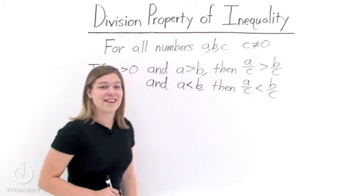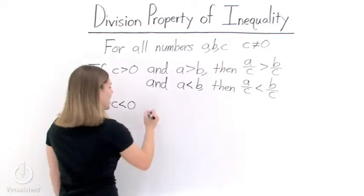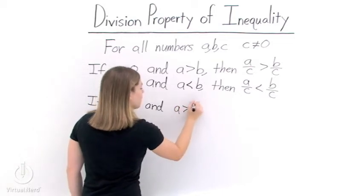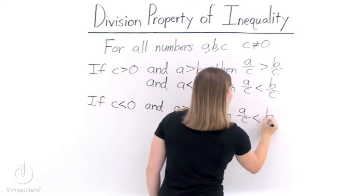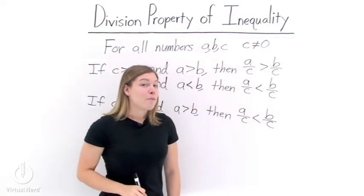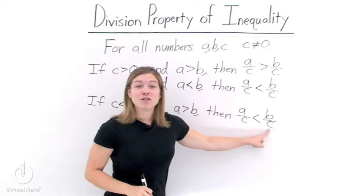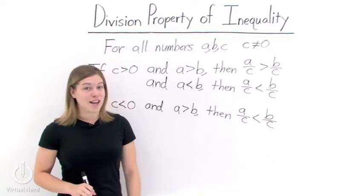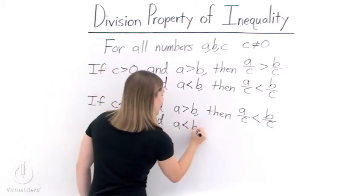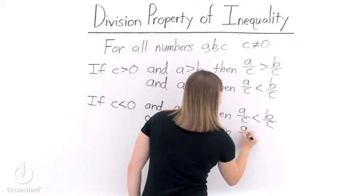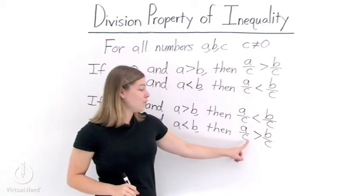Now let's look at the other case, when c is less than 0. If c is less than 0, or c is a negative number, and a is greater than b, then a divided by c will be less than b divided by c. Because we divide by a negative number on both the left and right-hand sides of our inequality, we must flip over the inequality symbol in order to preserve the inequality. Similarly, if a is less than b, then when we divide by a negative number, we flip over that inequality symbol, so a over c is greater than b over c.